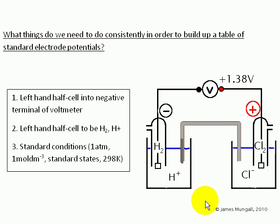And this diagram here shows how we would measure the standard electrode potential of Cl2, Cl minus. And as you can see, the voltmeter has the negative terminal on the left. It has the hydrogen half cell on the left. And this would have to have been done at one atmosphere for the hydrogen, one atmosphere pressure for the chlorine, one mole per decimetre cubed for the H plus and for the Cl minus, and at 298 degrees Kelvin. The measured potential here is plus 1.38 volts. So we can say that the standard electrode potential for Cl2, Cl minus is plus 1.38 volts.